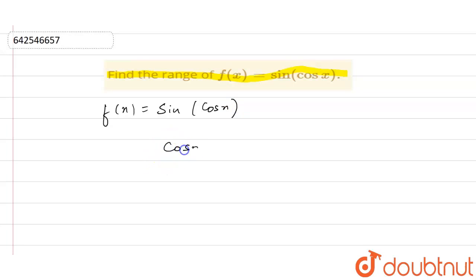Cos x is between minus 1 and 1. Now, we can write it this way: sin of cos x is greater than or equal to sin of minus 1, but less than or equal to sin of 1.